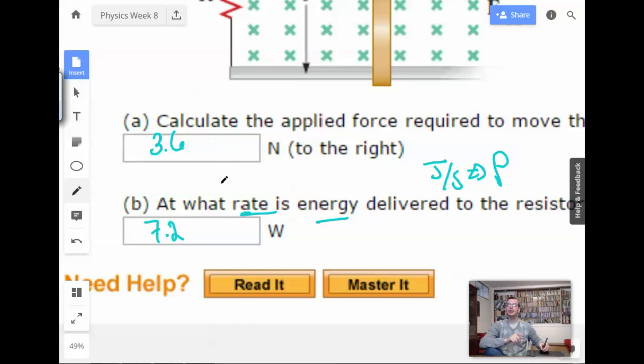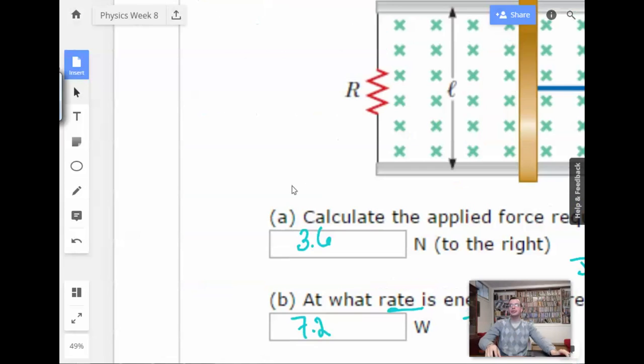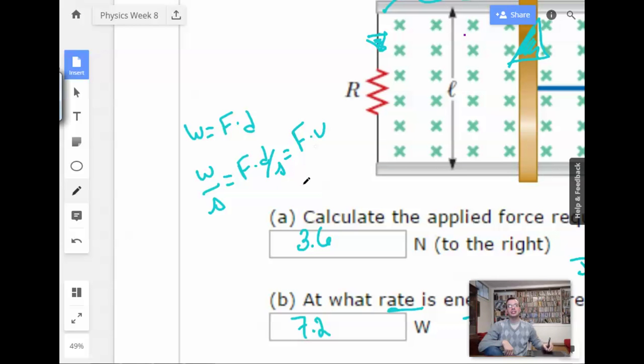Now there probably is another way to do this. So you could probably also do this by work equals force times distance. Therefore, work per second equals force times distance per second, which equals force times velocity, which equals 3.6 times 2, which gives us the same answer we had before, which is 7.2. Bam.